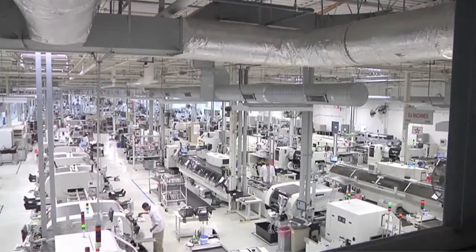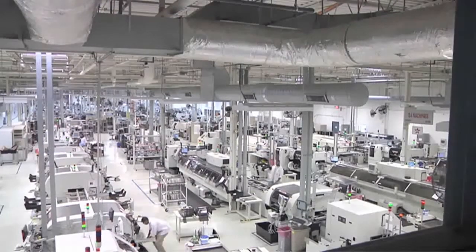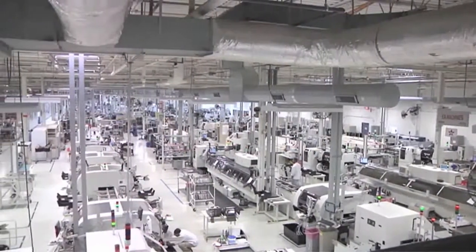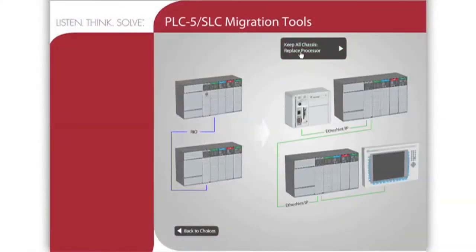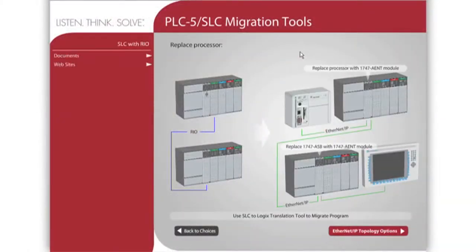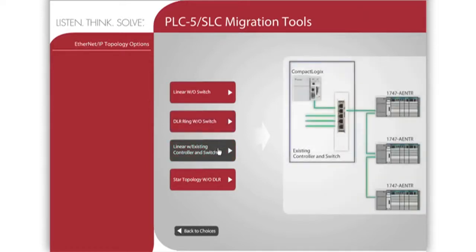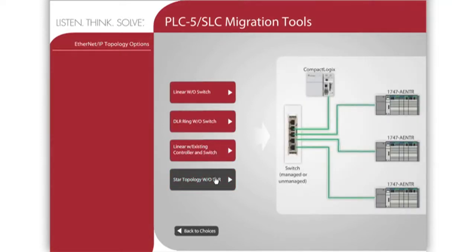Step 1. Document the current system layout and define future needs. Your first step is to document your existing system as a reference point. This will allow you to find a solution that meets existing and future requirements. The PLC5 SLC Interactive Migration Planner will step you through phased migration options offered by Rockwell Automation.